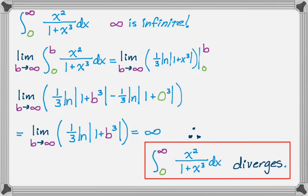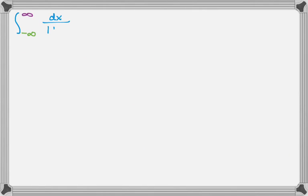All right, let's take a look at one more. So let's say we go from negative infinity to infinity of dx over 1 plus x squared. So hopefully you recognize that. Obviously the bounds are both infinite, so that's a problem.